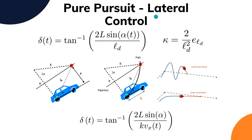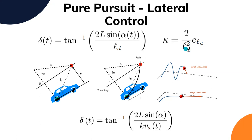Pure pursuit takes an arc path described by a simple trigonometric equation. The steering angle is dependent on the look-ahead distance, which in turn determines the curvature of the arc. The steering angle is inversely proportional to the look-ahead distance — it's a non-linear relationship. So if your look-ahead distance is very large, your arc will be very sluggish.